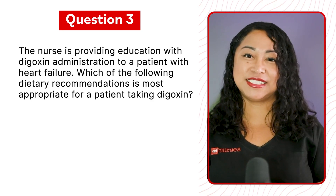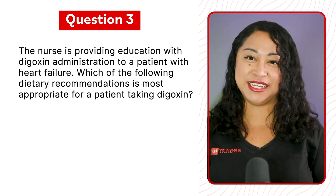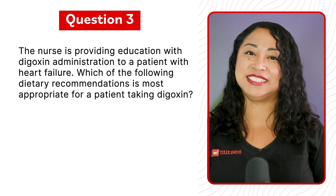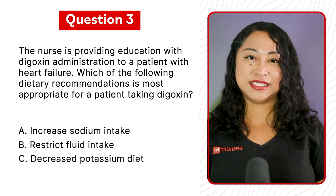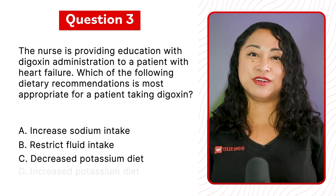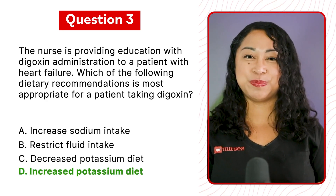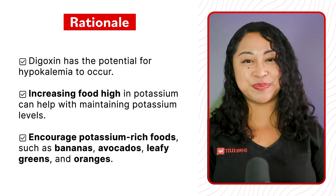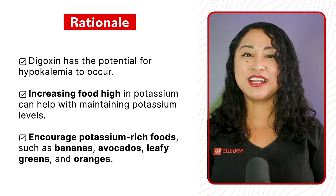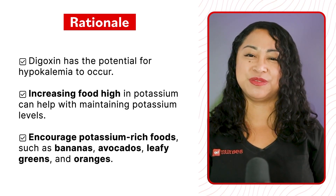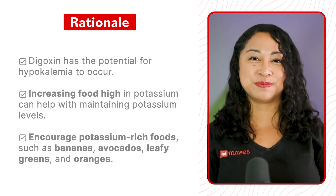Question 3: The nurse is providing education about digoxin administration to a patient with heart failure. Which dietary recommendation is most appropriate for a patient taking digoxin? A. Increase sodium intake, B. Restrict fluid intake, C. Decrease potassium diet, or D. Increase potassium diet. The correct answer is D — increase potassium diet. Digoxin has the potential for hypokalemia to occur, so increasing potassium-rich foods helps maintain potassium levels. Encourage foods such as bananas, avocados, leafy greens, and oranges.